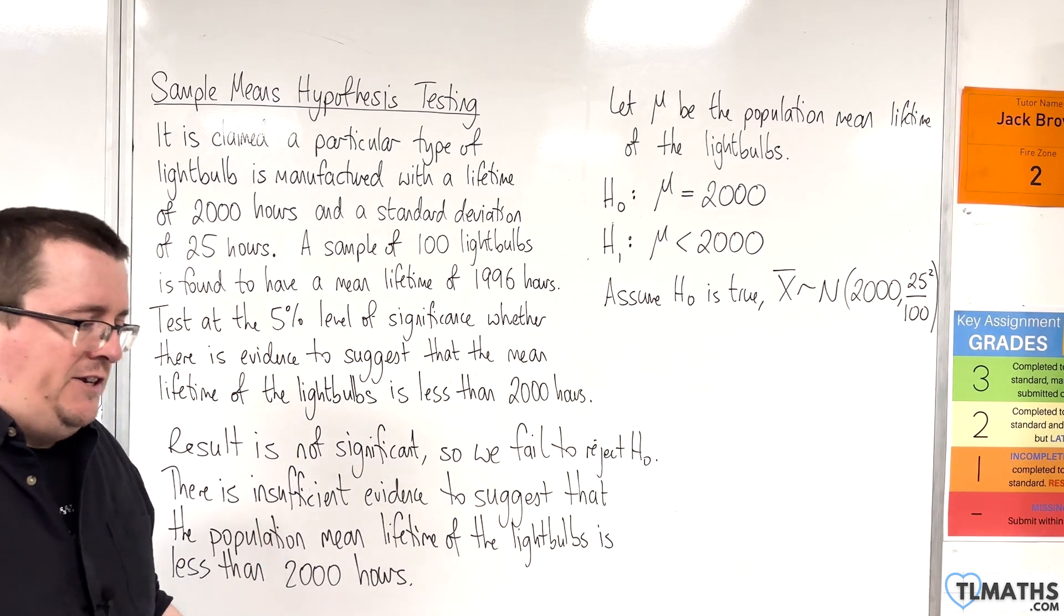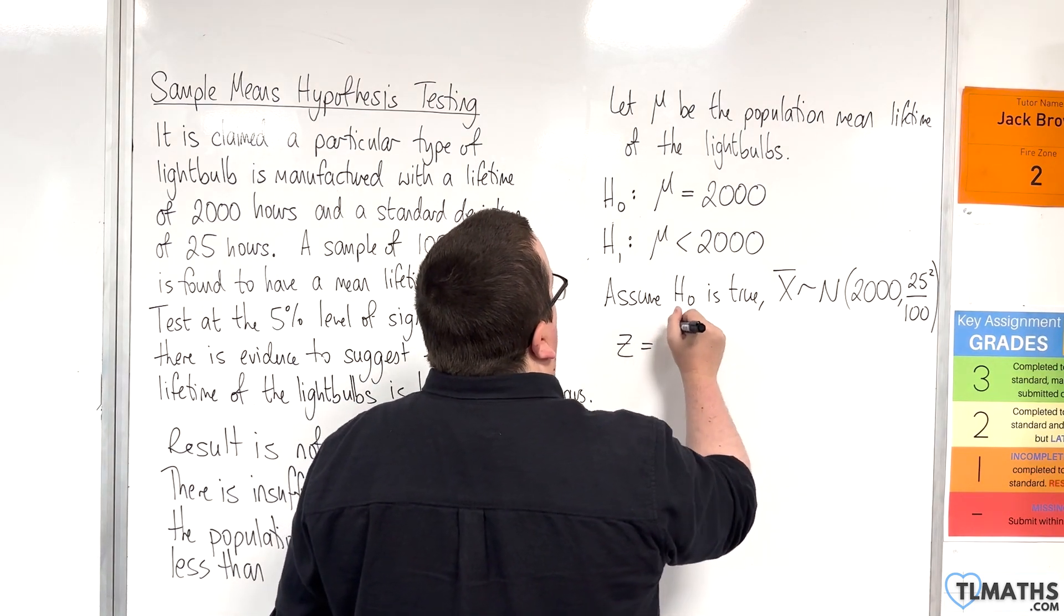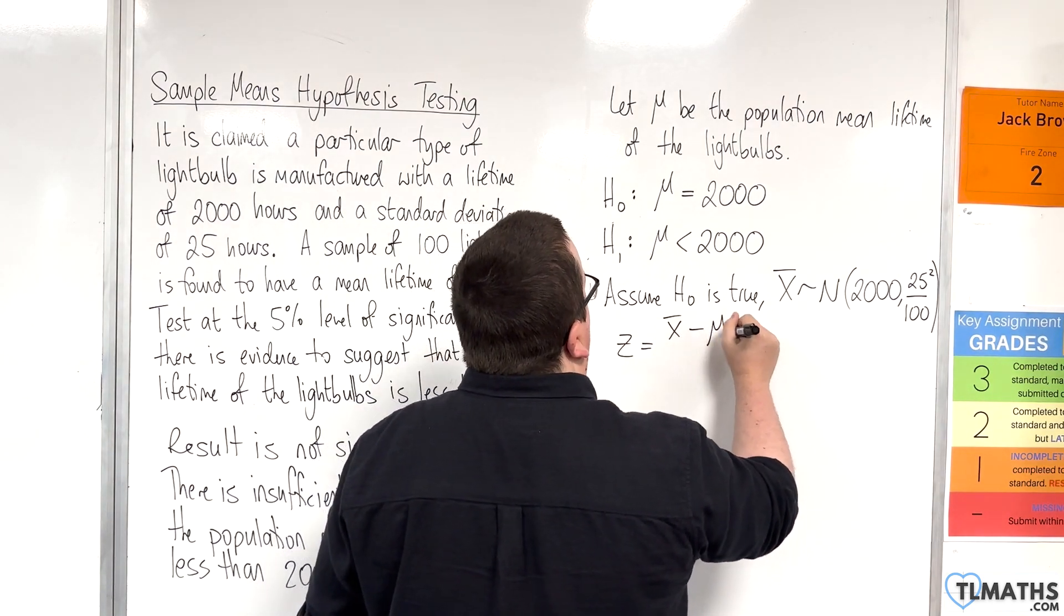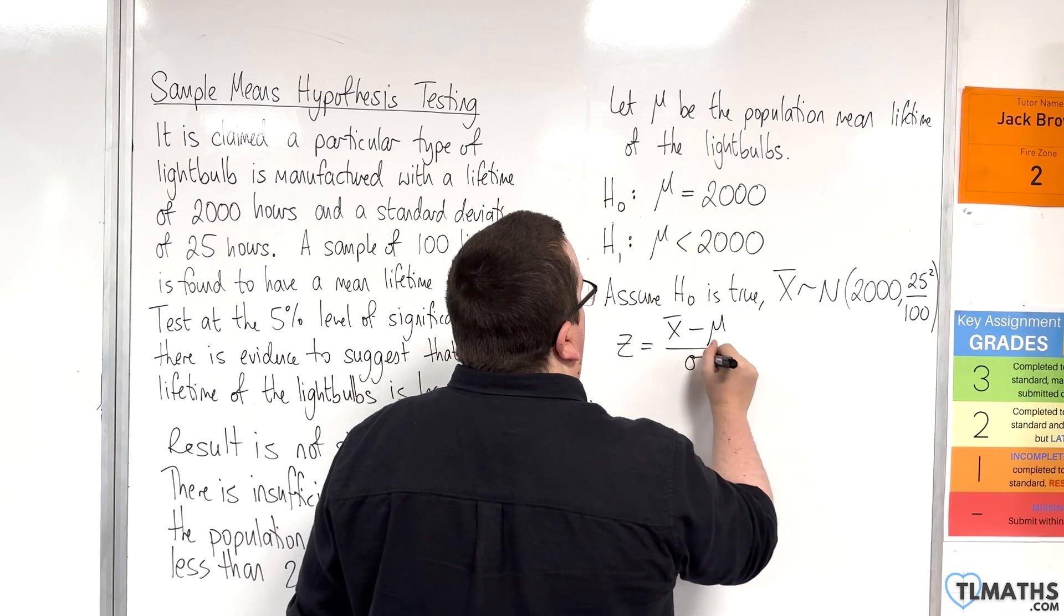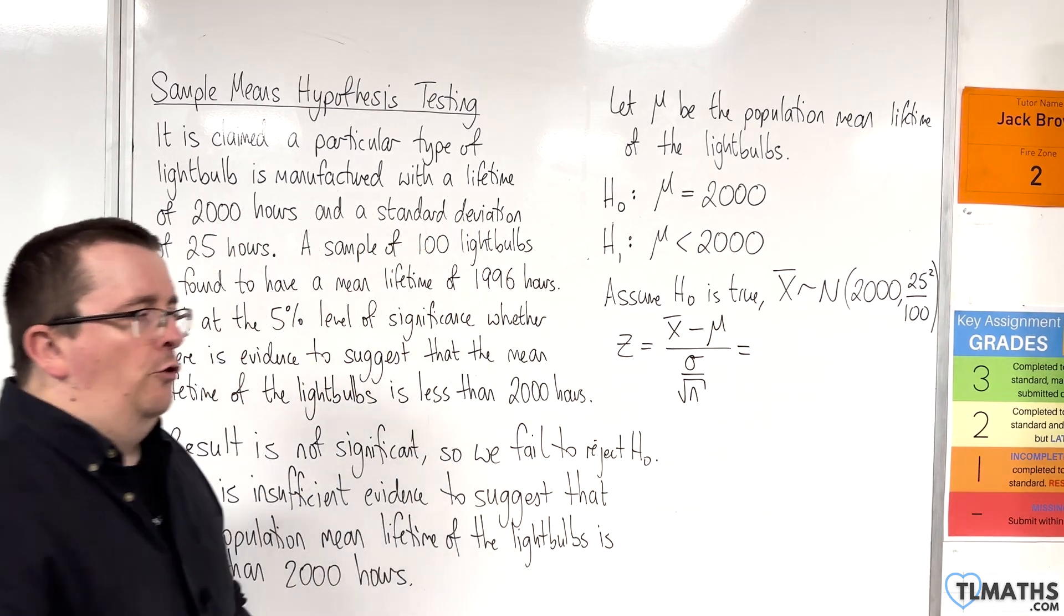So, how do we find the test statistic? Well, it uses the coding, z equals x-bar, take away the mean, divided by the standard error. Look for this in your formula booklet.